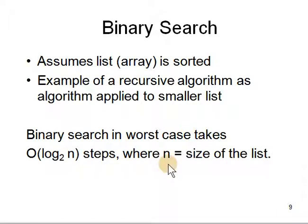So assume your list is sorted. So it takes a lot of time to sort. How much time does it need to sort? N log n. But once it's sorted it takes very fast. So if you are going to repeatedly search you need to sort it. And this is the divide and conquer algorithm. Okay. And apply to the smaller list.